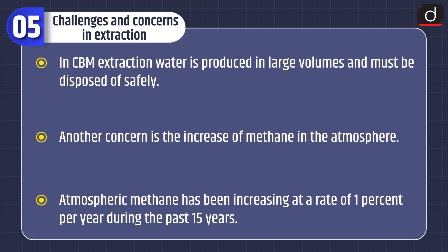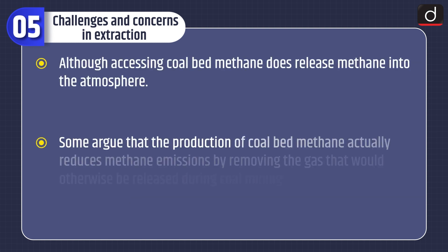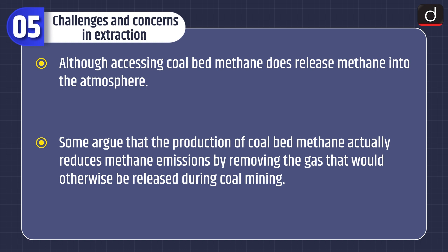Atmospheric methane has been increasing at a rate of 1% per year during the past 15 years. Although accessing coal bed methane does release methane into the atmosphere, some argue that the production of coal bed methane actually reduces methane emissions by removing the gas that would otherwise be released during coal mining.